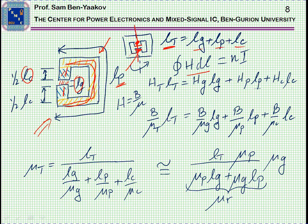The circular integral of H over the whole length will be Ht times Lt, where Lt is the total length and Ht is the equivalent total magnetic field. The magnetic field in each one of the parts is different. Here we have H sub G in the air gap, H sub P, and H sub C.